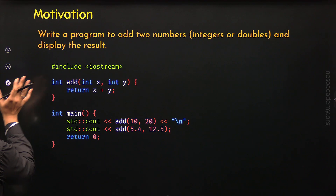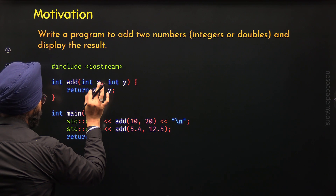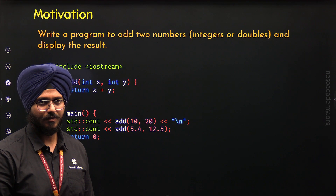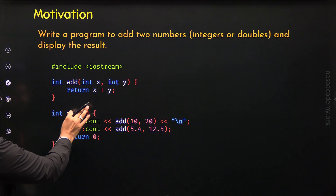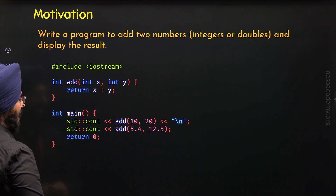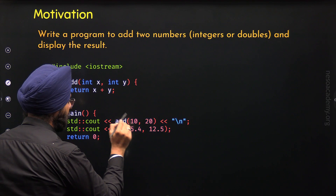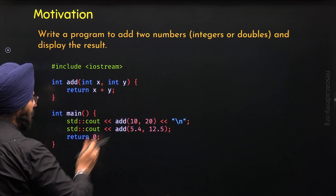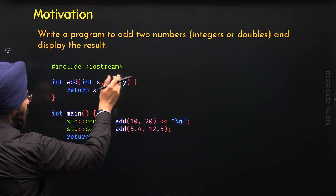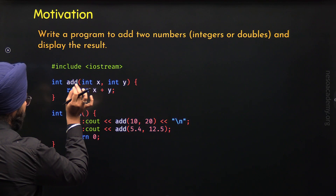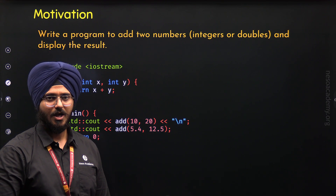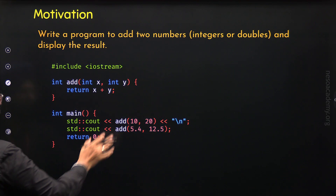These are integer parameters and therefore they can accept integer values. The return type of this function is int, so this function can return an integer value. Here we have the statement return x plus y — this function has the capability to return the result of x plus y. Inside the main function, I have written this cout with the call to the add function, passing values 10 and 20. x will receive 10, y will receive 20, the operation will be performed, and we will get 30.